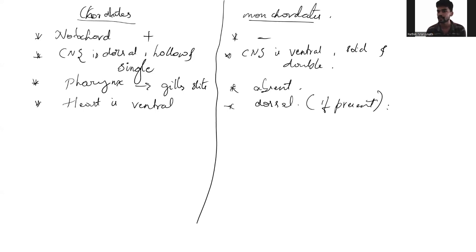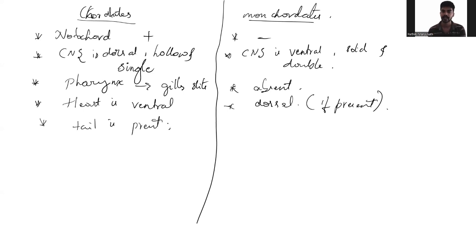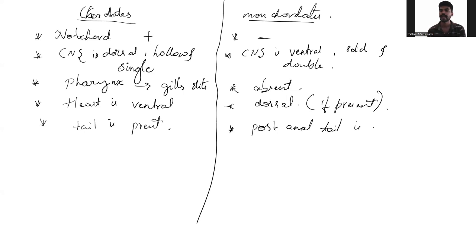In lower organisms, you don't see a heart at all; only in higher organisms will you see one. In higher organisms, a post-anal tail is normally present — with the exception of human beings, where the tail is vestigial and has disappeared with evolution. The post-anal tail is absent in non-chordates.